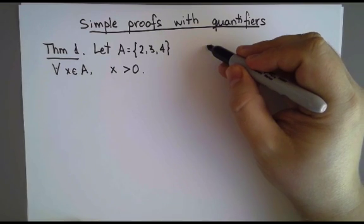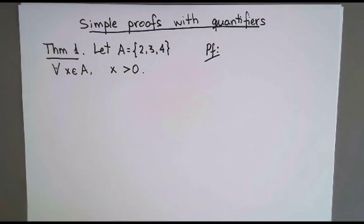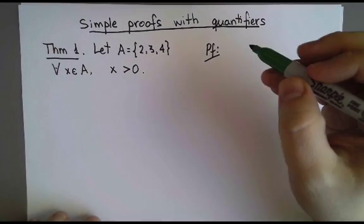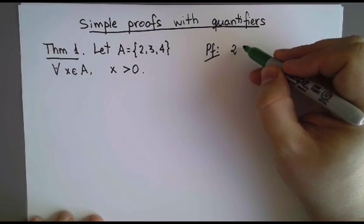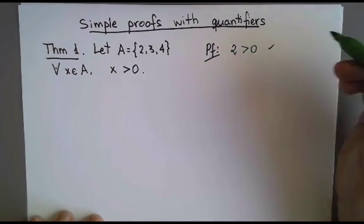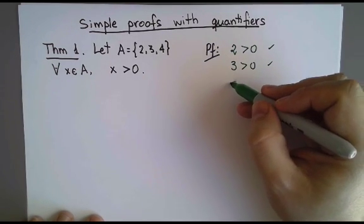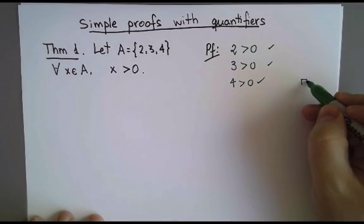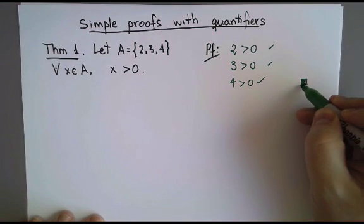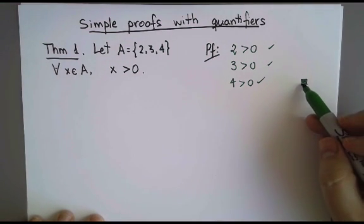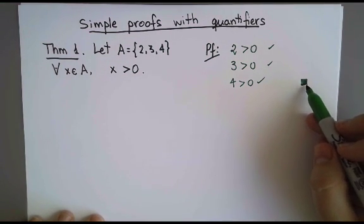How do we do this proof? Well, since I need to prove that this inequality is true for every element in A, I'm going to check all the elements in A one by one. There are three elements, so that won't take long. I need to check that 2 is greater than 0, which is true, 3 is greater than 0, which is true, and 4 is greater than 0, which is true. And that's it. I don't need to do anything else. This little square I've written here means end of the proof.